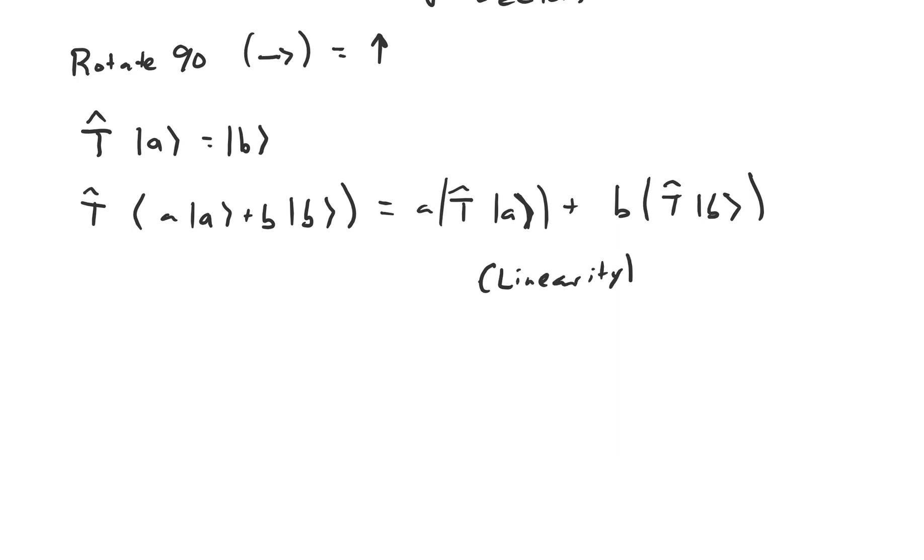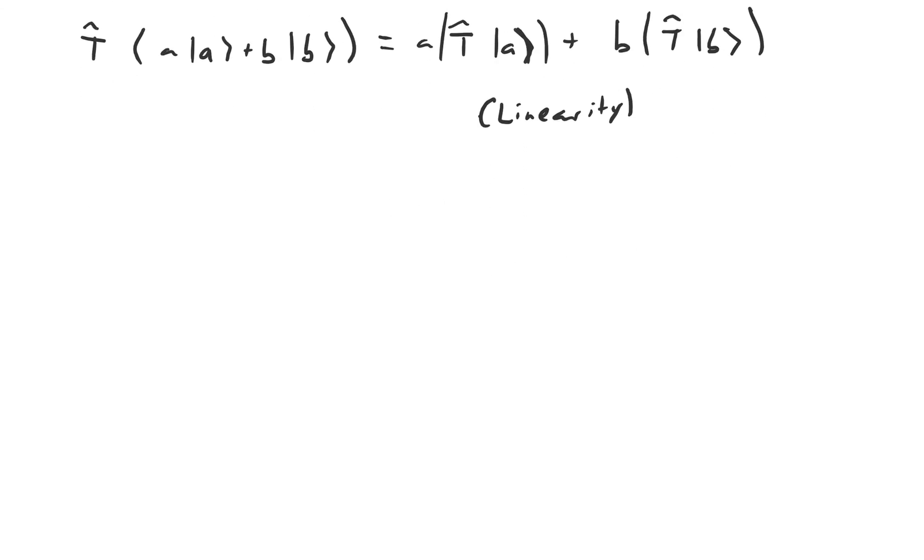How do we specify a linear transformation if we don't want to write out what that transformation does? It turns out that we can just specify what this linear transformation does to the basis vectors of a space. Let's say we have a basis consisting of n vectors, |b₁⟩, |b₂⟩, ..., |bₙ⟩, and suppose we know what T̂ does to each of these vectors.